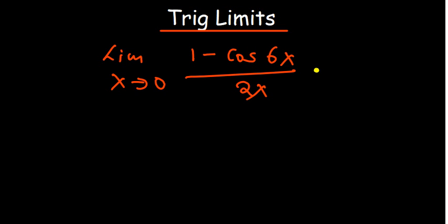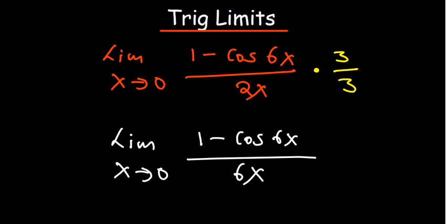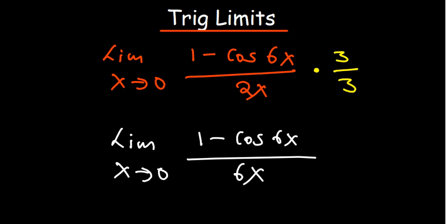We multiply the denominator's 2X by 3 to get 6X, so we multiply by 3 over 3 to keep the expression equivalent. On the next step, we have the limit as X approaches zero of one minus cosine 6X over 6X. The 3 on top remains as a coefficient, so we rewrite it as 3 times the limit as X approaches zero of one minus cosine 6X over 6X.